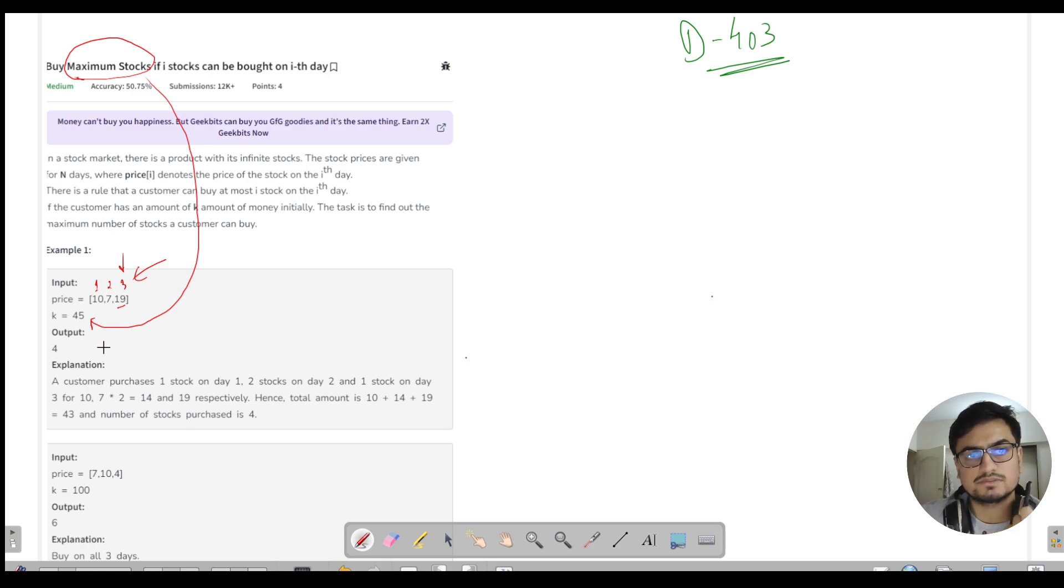There are three things: maximum stocks, given money, and the index constraint. You can see that on day 1 the first stock is bought once, second stock twice, and third stock once, giving a total value of 43. The basic understanding is we need maximum stocks with some money and need to determine the quantity we can buy.